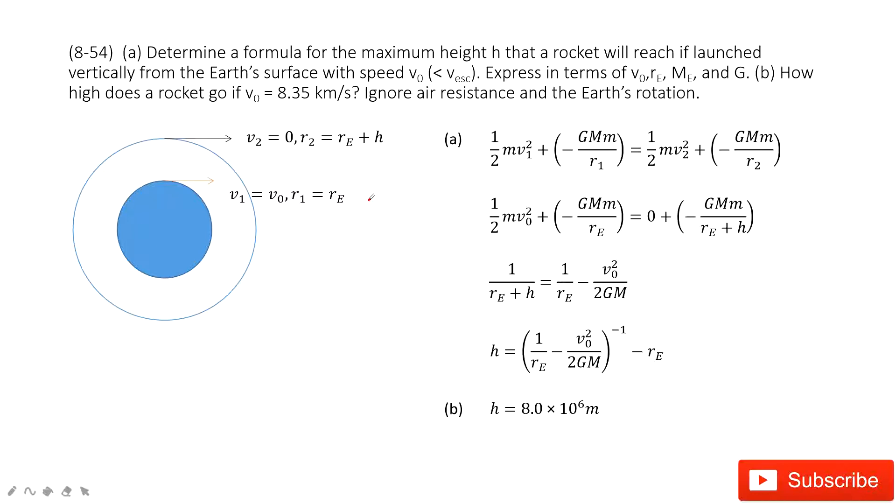Chapter 8 is about conservation of energy. In this problem we need to determine the height h, the distance the rocket traveled to reach the peak point.